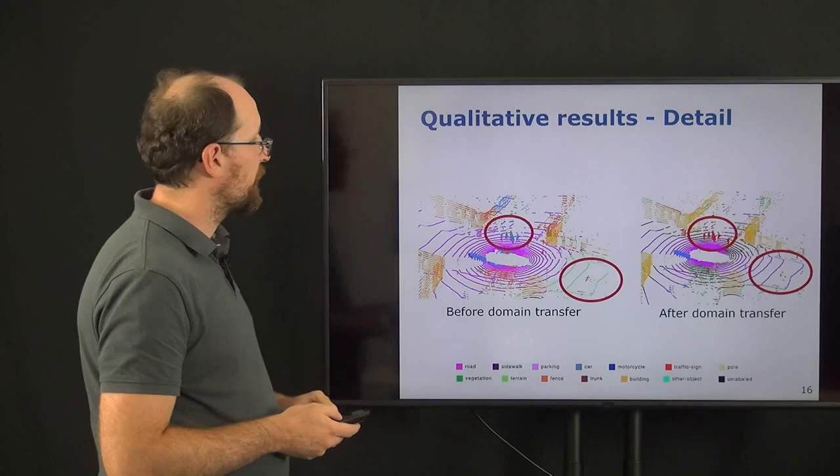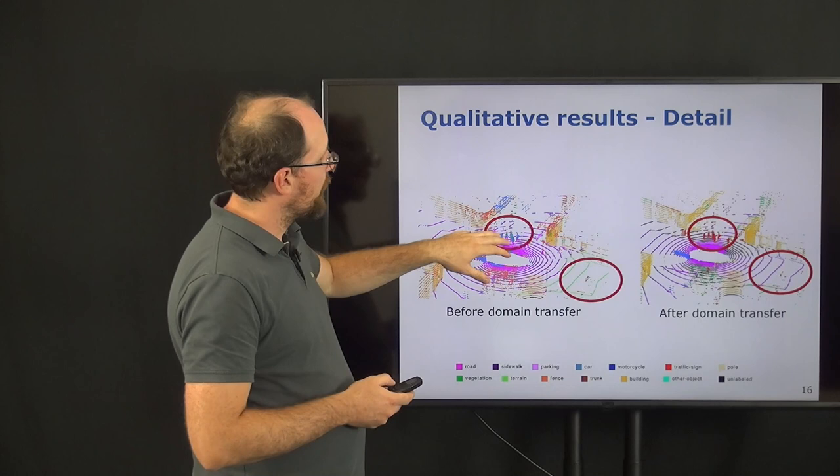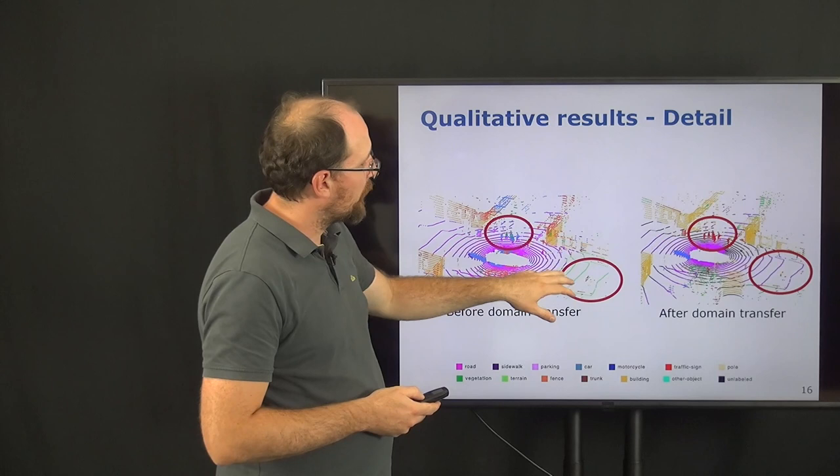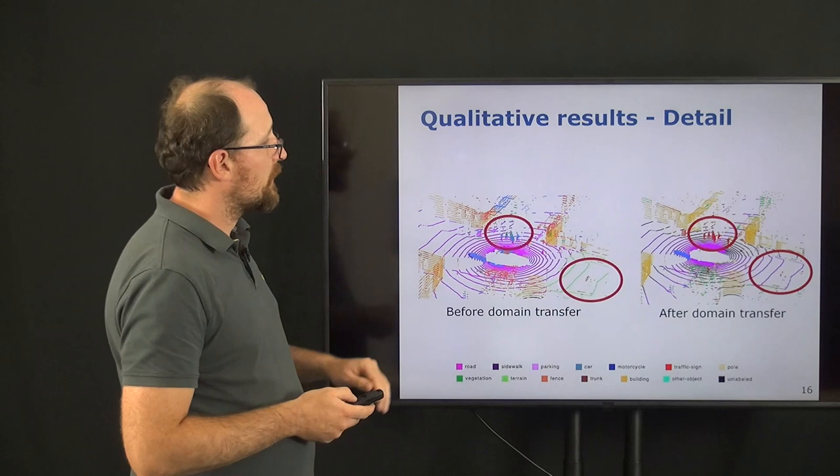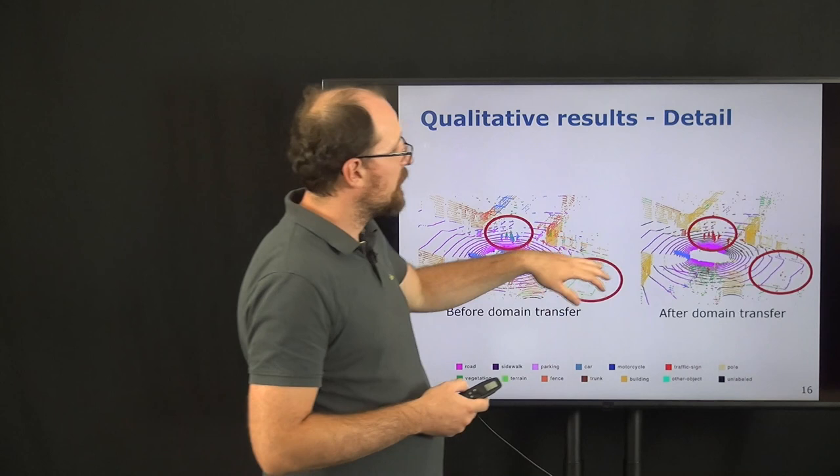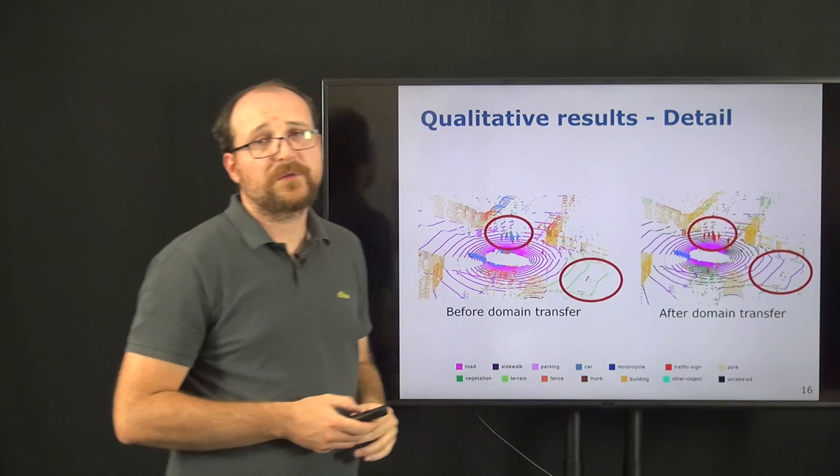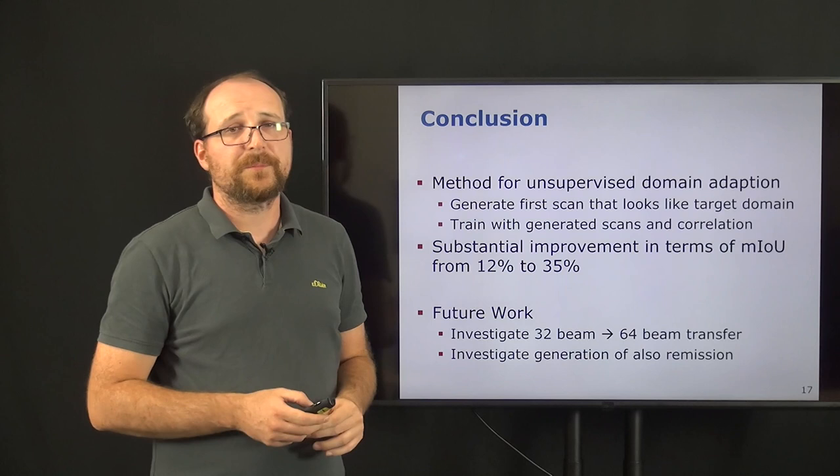And then we come now back to our motivating example. Then we can see before the domain adaptation, we had the problem that these pedestrians get wrongly classified as vegetation or car points. And the drivable surface in front of the car get now classified as terrain. But when we now see, when we use our domain adaptation approach, we can see that we can get correctly classified the pedestrians, but also get the correct classification for the drivable space.